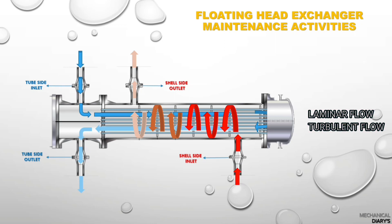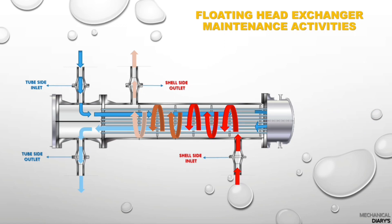The shell side has laminar flow and the tube side has turbulent flow. On the shell side, the fluid enters in one direction and exits in the same direction. On the tube side, the fluid enters in laminar flow, but when it reaches the floating head area it converts to turbulent flow. Turbulent flow provides more heat transfer than laminar flow.